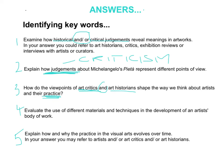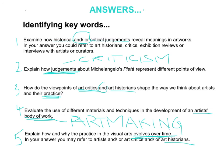Question four: Evaluate the use of different materials and techniques in the development of an artist's body of work. Hopefully you identified artist's body of work because it refers to art making. Question five: Explain how and why the practice in visual arts evolves over time. In your answer you may refer to artists and/or art critics and/or art historians. This one is a little more challenging because art evolving over time means you definitely have to talk about art history, but you could also talk about critics and by referring to artists you would talk about their practice. This one draws on all three elements, though the and/or means you might choose to focus on one more than the others.